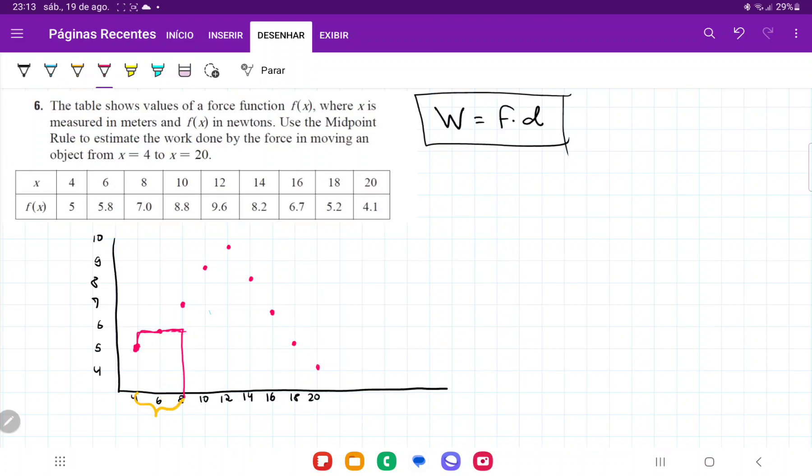So let's see what this one is going to be. Work is force times distance. This distance goes from 4 to 8, so it is a distance of 4 times the force at the point 6, which is 5.8. So we say 4 times 5.8, and that is the work done in this little chunk using the midpoint rule.